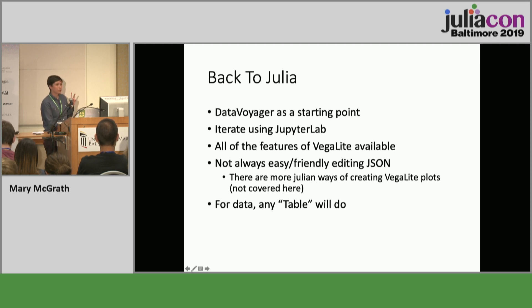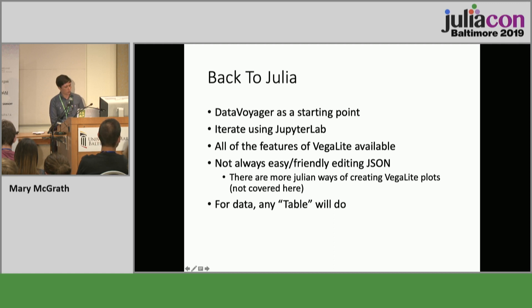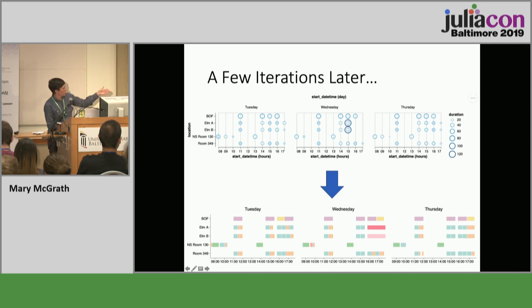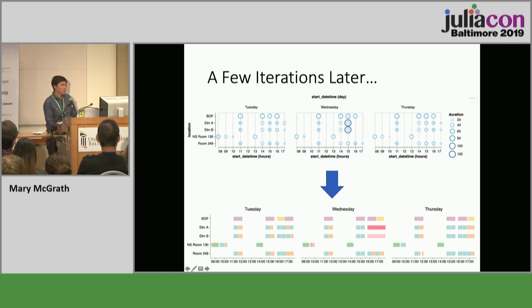In terms of data, any table format that Quinn or Jacob just covered will do. So after a few iterations, this is what we started out with — some circles, all blue. The times aren't quite right. And then with a little bit of tweaking, we're able to get something that's a little bit more colorful. The times are set up. This is basically our calendar for the next three days. But it doesn't tell you what any of these talks are about.